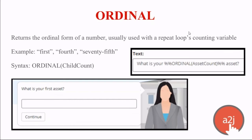Ordinal is the next function. What ordinal does is return the ordinal form of a number, and it is usually used with a repeat question and its counting variable. For example, it would return 'first,' 'fourth,' '75th,' '412th' — whatever number you give A to J, it will return the ordinal value. The syntax is ORDINAL(childCount) — here without brackets because there's no space. The text would read 'What is your [ordinal assetCount] asset?' In the screenshot it shows 'What is your first asset?' on the first loop, then second, third, fourth, as the asset count increments each round.